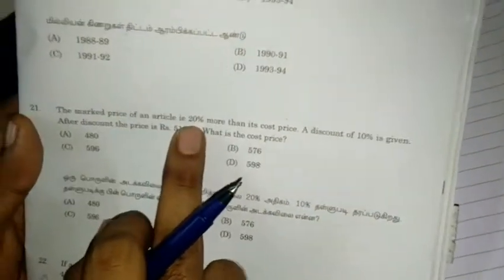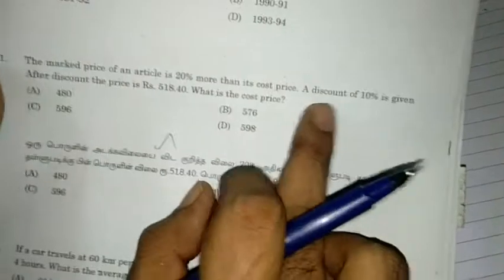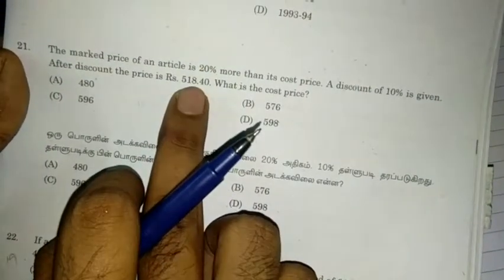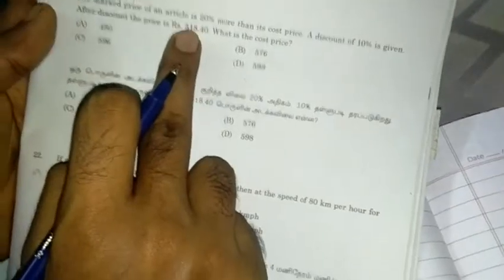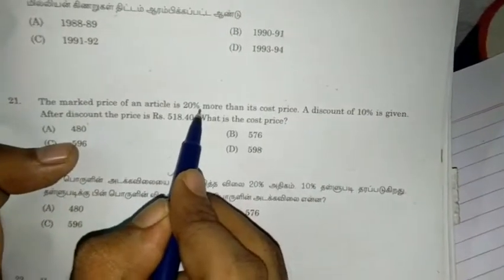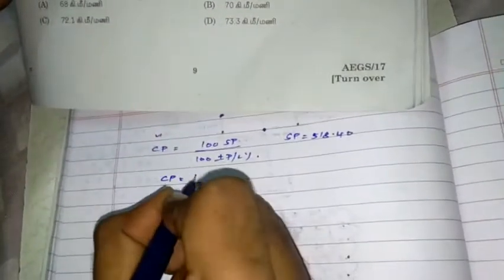The market price of an article is 20% more than its cost price. A discount of 10% is given. After discount the price is 518.40. What is the cost price? So first one, what is the cost price? Cost price formula. Cost price is equal to 100 SP divided by 100 plus or minus profit or loss percentage. So cost price after discount. So you don't know. This one. Now you solve the sum. Now the price of the cost price is complete. How much percentage is the sum. So this is the cost price. Now the cost price is it. The market price of an article is 20% more than its cost price. So first one, cost price is 100. Market price is 20%. Cost price is more. So, at 100, that is 120.